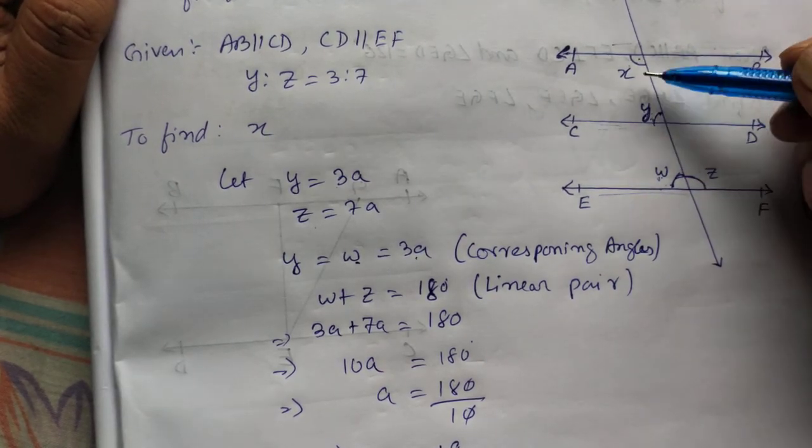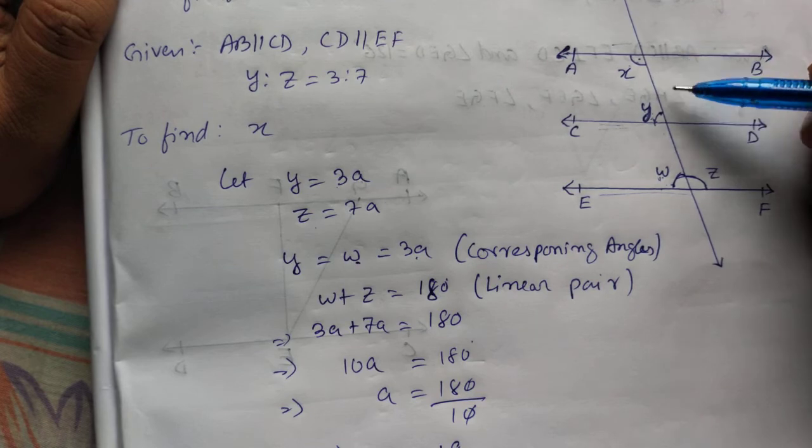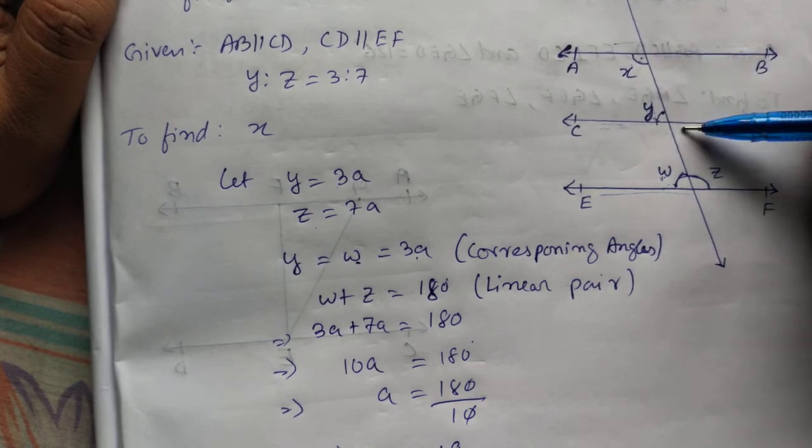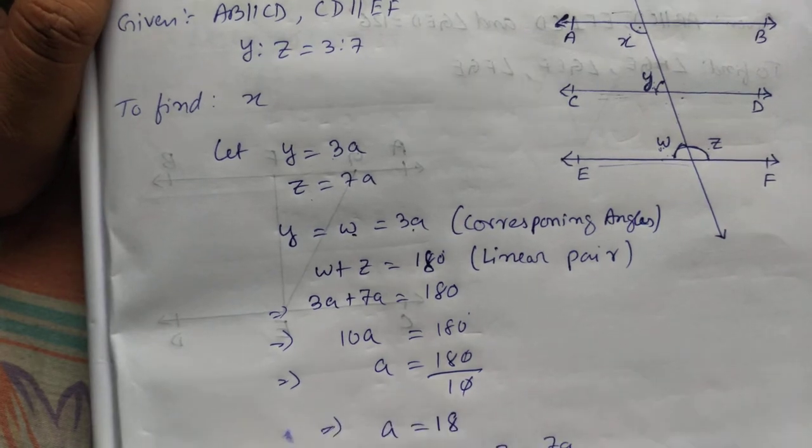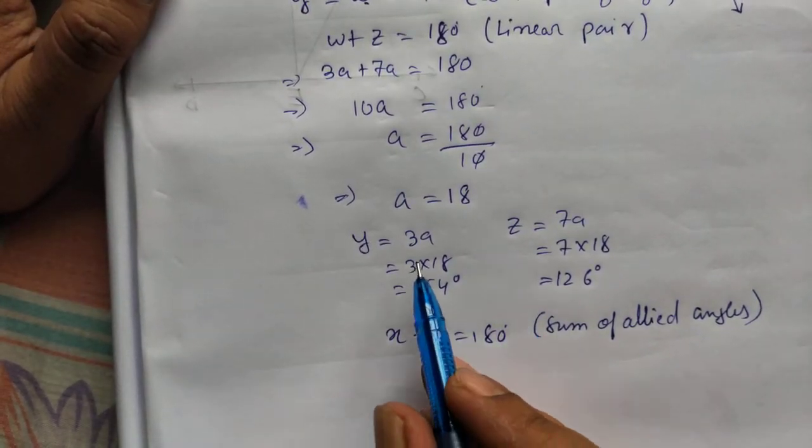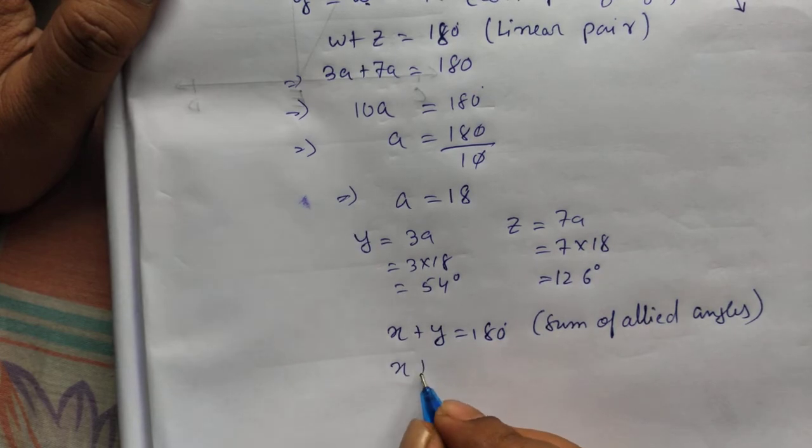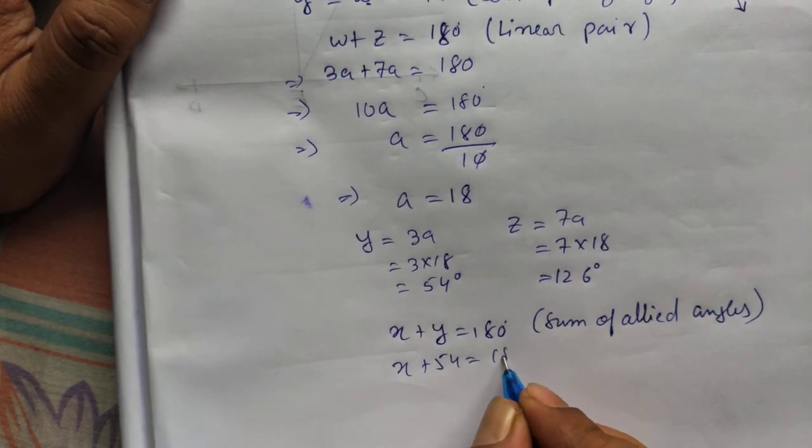If I add interior angle on the same side of transversal, it will be 180. If I add this, it will also be 180. If I add this angle and this angle, it will also be 180 like that. So x plus y is 180. y we already got 54. x plus 54 will be 180.